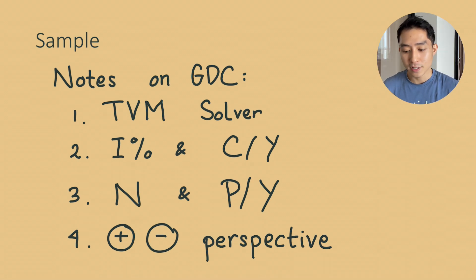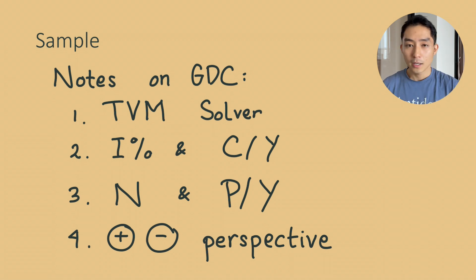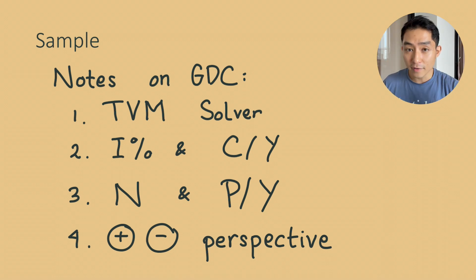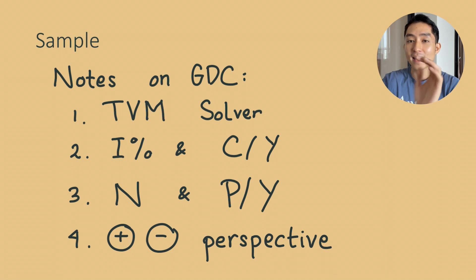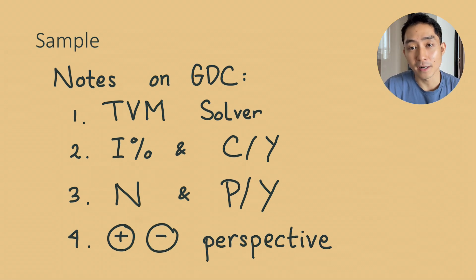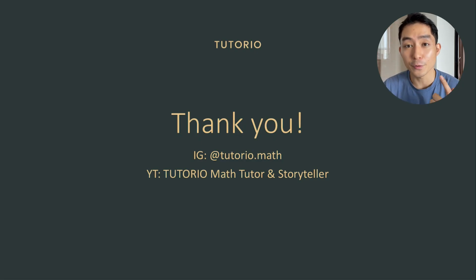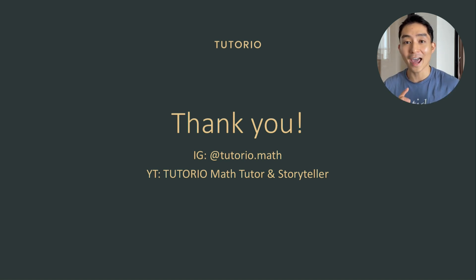Students sometimes worry about the plus/minus symbol in the calculator when solving for present value or future value. The best practice is: if you are putting money into the bank, the money moves out from you, so use a negative symbol for the present value — the result will be a positive future value. If you're taking a loan, the present value is positive, and the future value is negative because it's money that will come out of your pocket to pay the debt. Regardless, always finalize your answer as a positive value of money in your written statement.